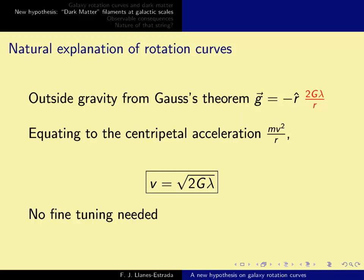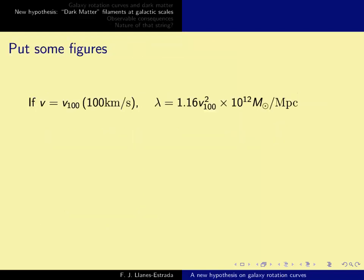So let's put some figures in. If the velocity is measured in v₁₀₀, which is a unit basically 100 km per second, so how many times 100 km per second is a star moving around the galactic center? Then lambda comes out to be 1.16, this velocity squared, times 10 to the 12th solar masses per megaparsec.